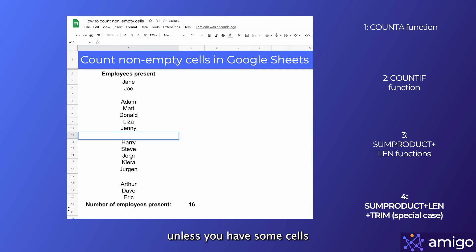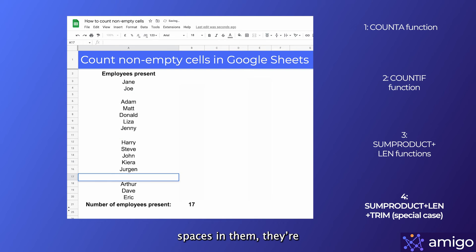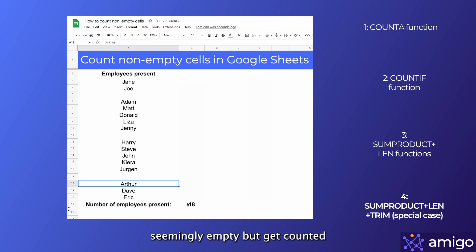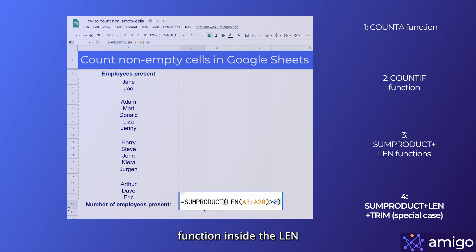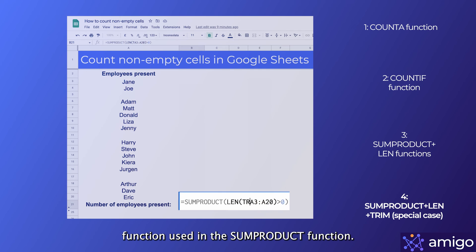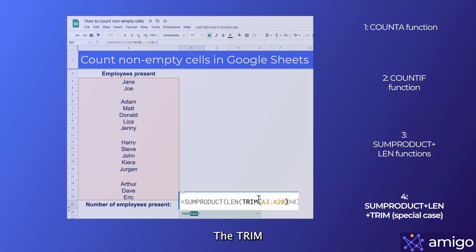All of these methods work perfectly fine unless you have some cells which only contain spaces. They're seemingly empty but get counted if we use any of the three methods above. We can solve this by adding the TRIM function inside the LEN function used in the SUMPRODUCT formula. The TRIM function removes space characters from text.